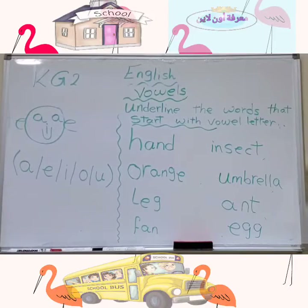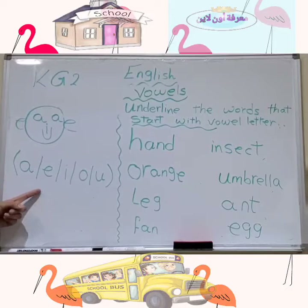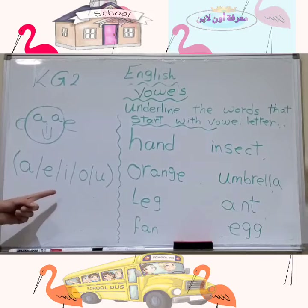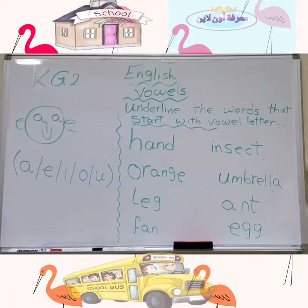Let's remember the sound of each letter. Letter A — its sound is A. Letter E — its sound is A. Letter I — its sound is E. Letter O — its sound is O. Letter U — its sound is A.